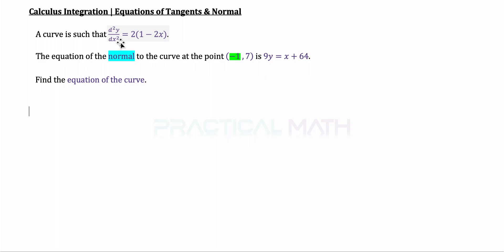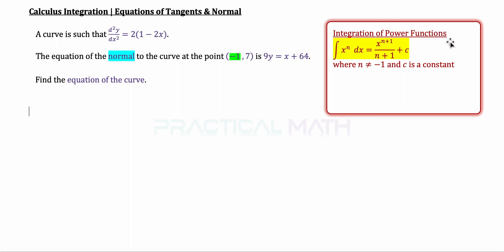So let's recap on the integration of power functions to the right. By the integration of power functions, which is highlighted in yellow, ∫x^n dx shall give us x^(n+1)/(n+1) + c, where c refers to the arbitrary constants from the integration.